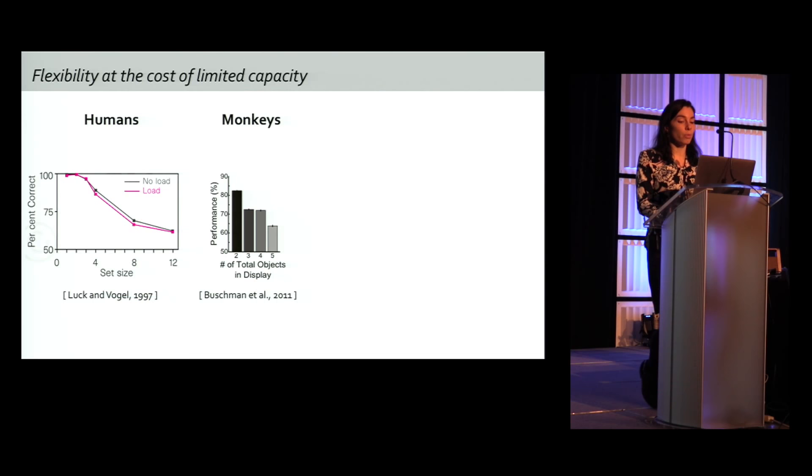This limited capacity is well known in humans and monkey. For example, in working memory tasks where subjects are asked to remember an increasing number of items on the screen. In both of these plots here, the y-axis is the performance, and the x-axis is the set size or the loads of the working memory tasks. And our model reproduces this performance decrease as a function of set size and provides a mechanistic explanation.